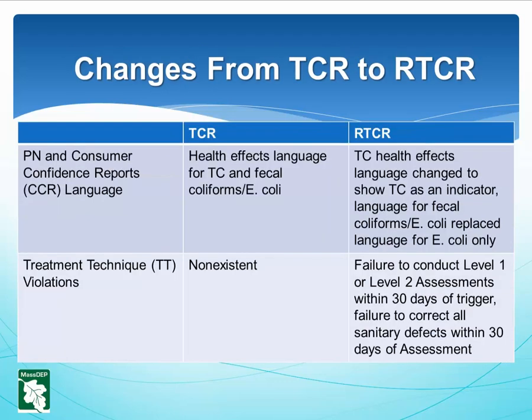There have also been changes regarding the Mandatory Language for Public Notification (PN) and Consumer Confidence Reports. In the RTCR, total coliform (TC) health effects language has changed to show TC as an indicator of the possible presence of contamination. Language for fecal coliforms and E. coli has been replaced with language for E. coli only.